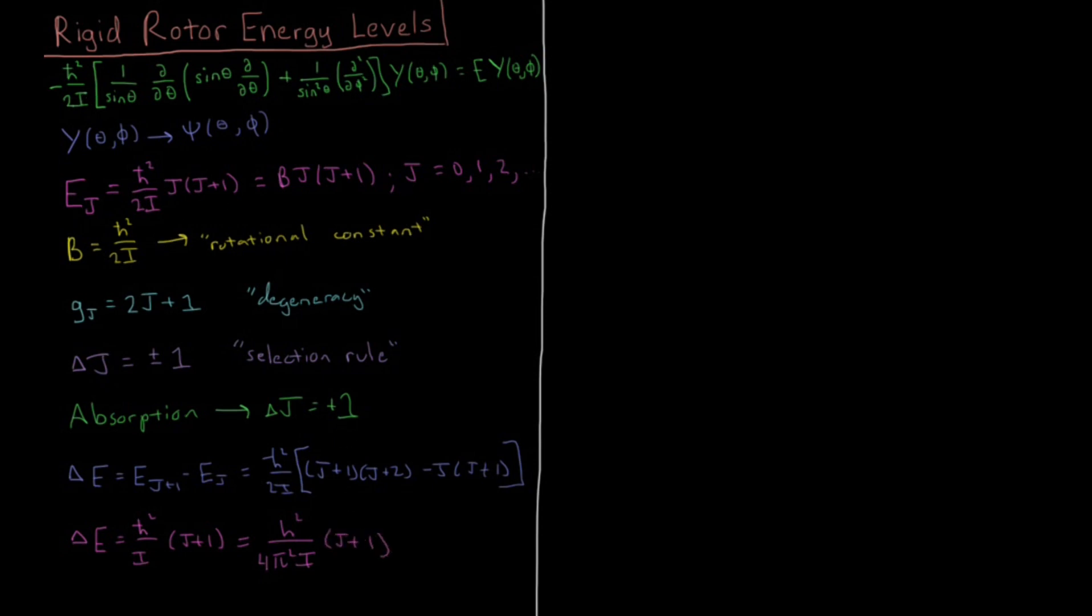Now, the reason that we're separating that out into h instead of h bar, just a regular Planck's constant instead of reduced Planck's constant, is because delta E, as we know, is equal to the energy of the photon which is absorbed. So that's equal to Planck's constant times the frequency of that photon, E is equal to h nu. So to make that convenient for cancellation, we have h squared over 4 pi squared i times j plus 1.